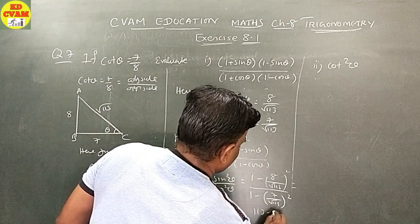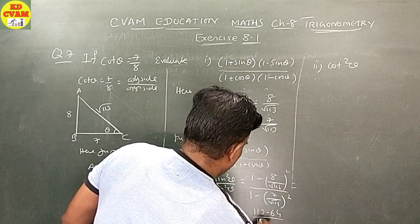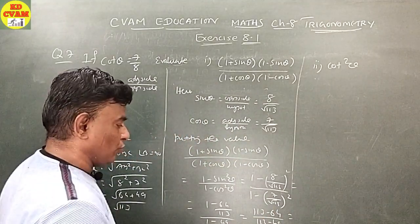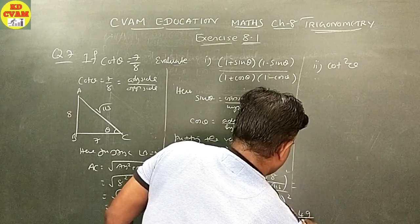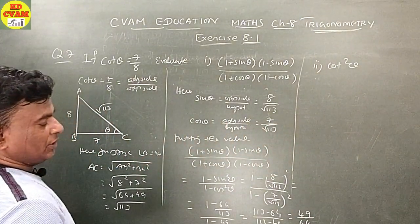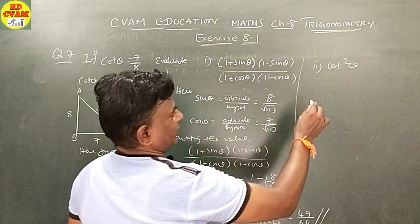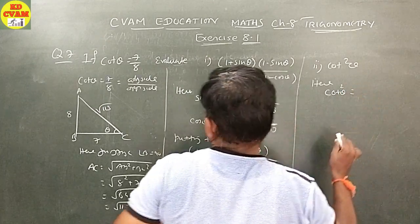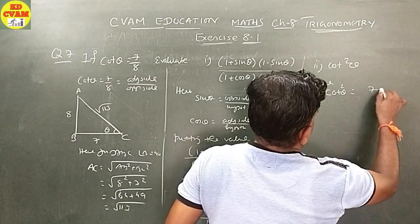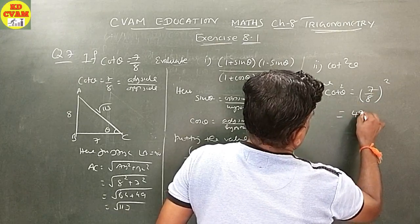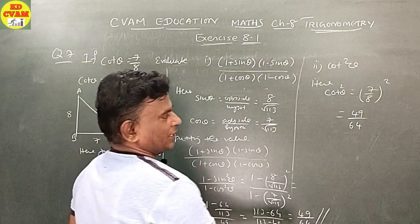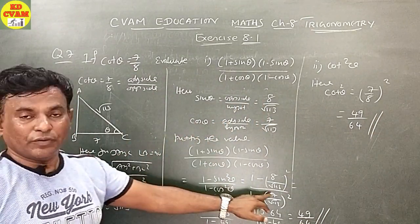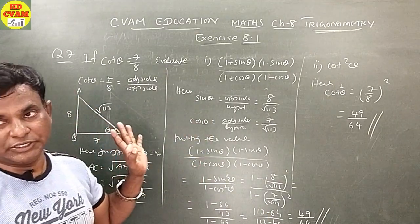This gives 49 upon 64. I hope you understood. You need to know simplification and the formula well.